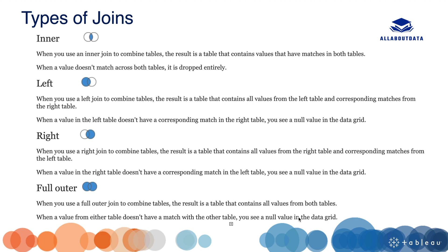Types of joins: there are four types of joins in Tableau — inner join, left join, right join, and full outer join. Inner join, as the name suggests, is used to return the data that is common between both tables. When a value doesn't have a match across both tables, it will be dropped entirely.